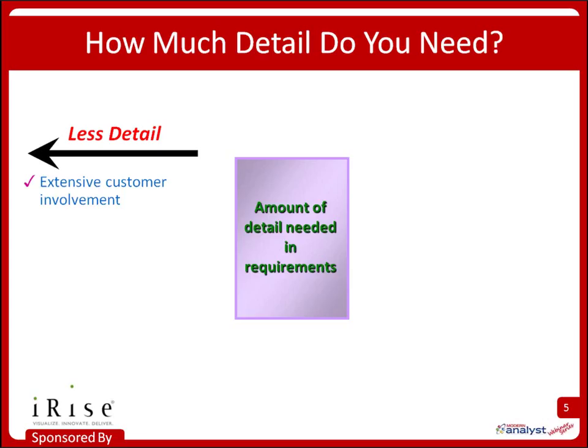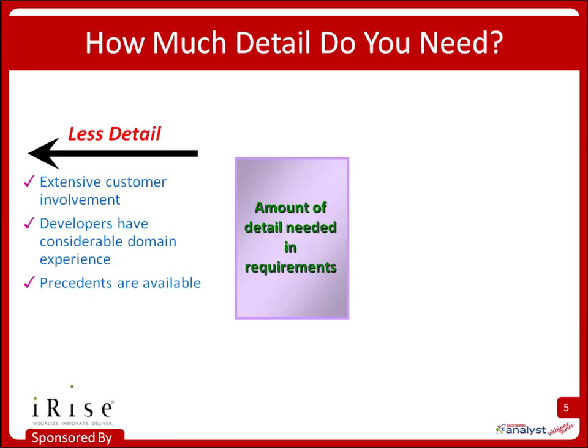Conditions that suggest less detail may be needed: if you have extensive customer involvement — on-site customers available on a moment's notice to answer questions — you don't need as much detail. If you have developers with a lot of domain experience, or you're building something with a precedent available — an existing system you're re-engineering, or the next member of a product family — you may not need to specify as much detail. But be careful: sometimes people have different ideas of what an existing system actually does.